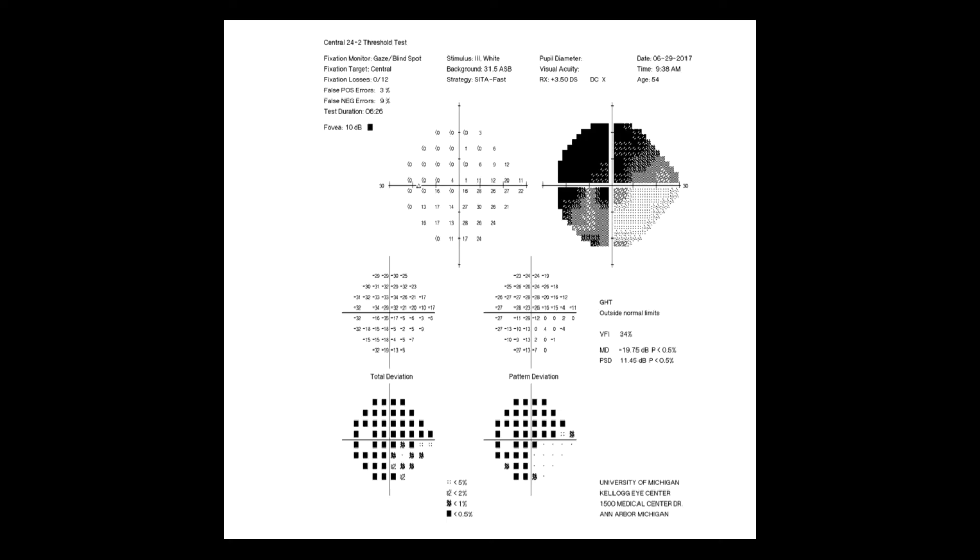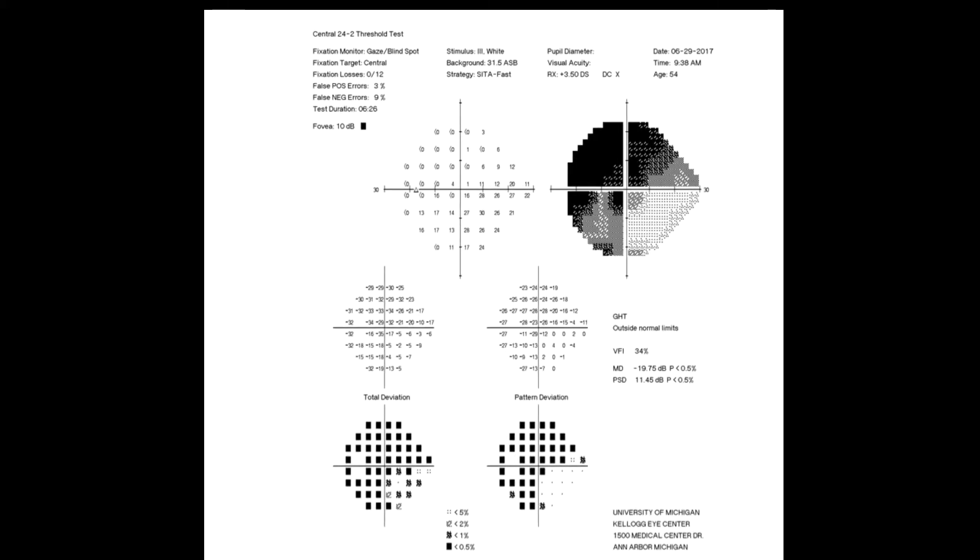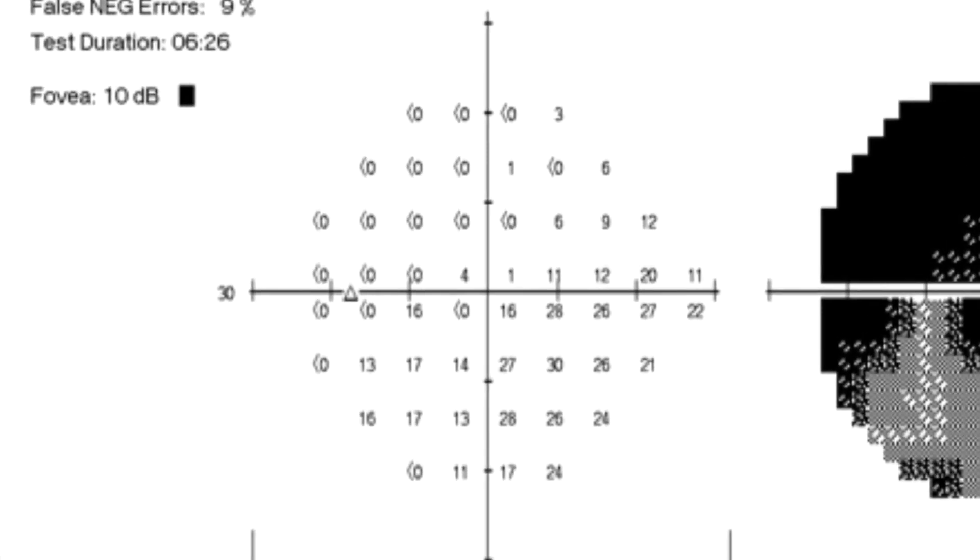Each display spot was retested until a stable visual threshold was reached that established how bright the test spot had to be before the patient consistently detected it. On the results sheet, each data point represents a visual threshold in the field of vision for that testing session.